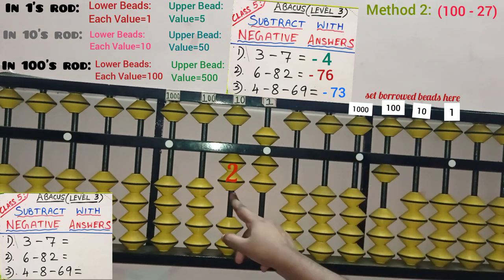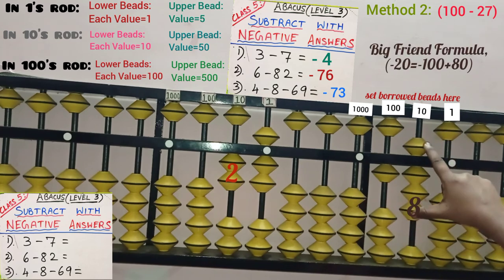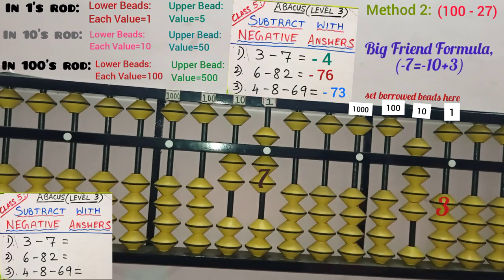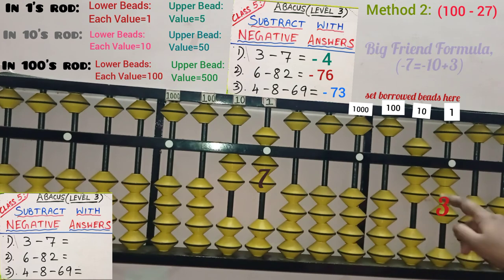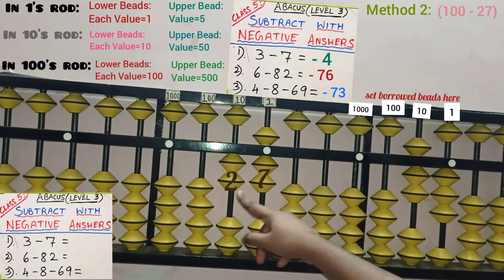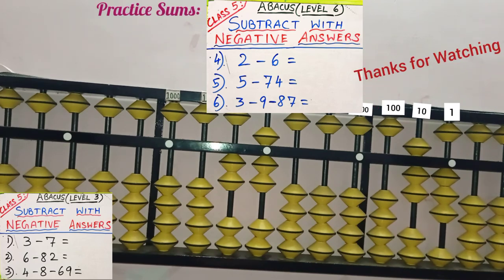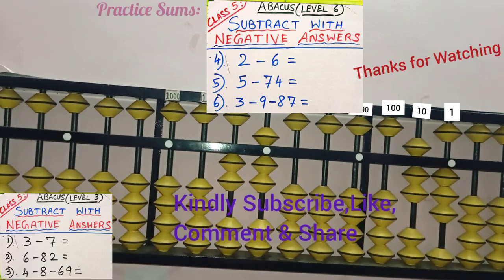Second method: in 10's place 2 beads are there. 2's big friend is 8, so add 8 beads in same 10's rod — 5, 6, 7, 8 — 2's friend 8 is added. Remove the bar from 100's rod. Minus 100 plus 80 equals minus 20 completed. In 1's place, 7 beads are there. 7's big friend is 3, so add 3 beads in same 1's rod — plus 3 — and remove bar in next rod: minus 10. So minus 10 plus 3 equals minus 7 completed. 100 minus 27 is our answer — that is, minus 73. We are taking the answer from the right side part, so minus 73 is our answer. This is second method. Hence 3 sums completed. These 3 problems are for your practice — you can try using Abacus. If you have any doubts, please comment below. In the next video, we will see borrowing and written sums for 2-digit numbers. Thank you friends.